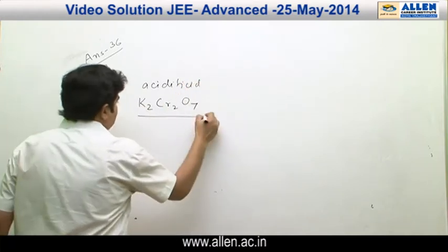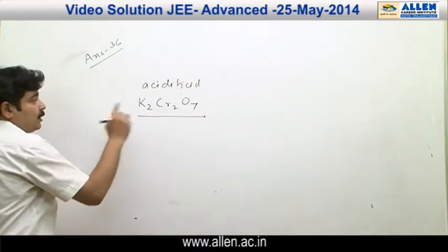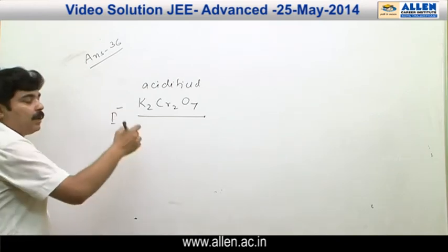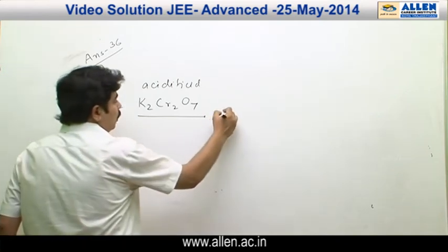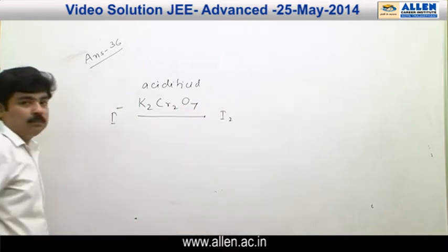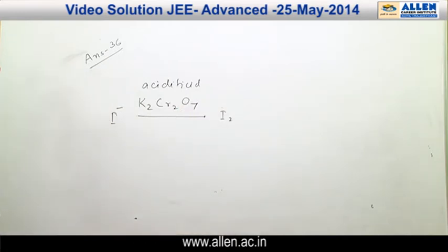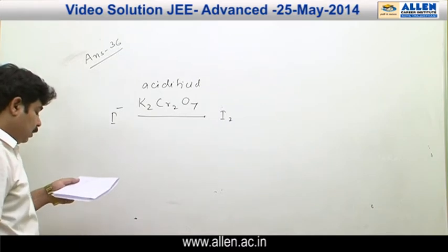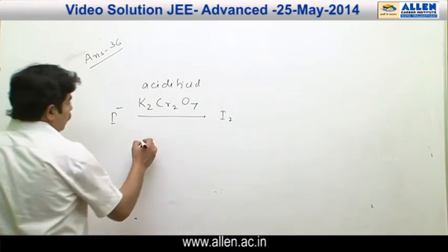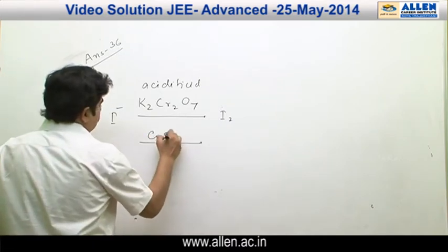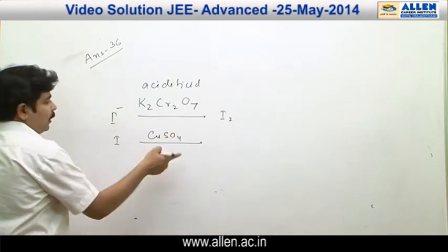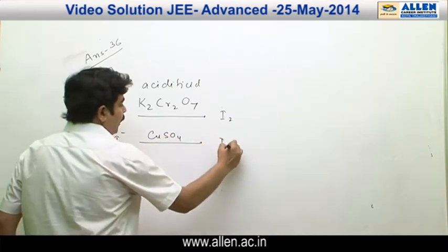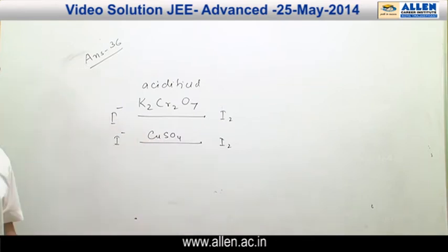When acidified K₂Cr₂O₇ reacts with I⁻, it converts I⁻ into I₂ and chromium is converted into Cr³⁺. Similarly, when copper sulphate reacts with I⁻, it converts I⁻ into I₂ and copper is converted into Cu⁺.